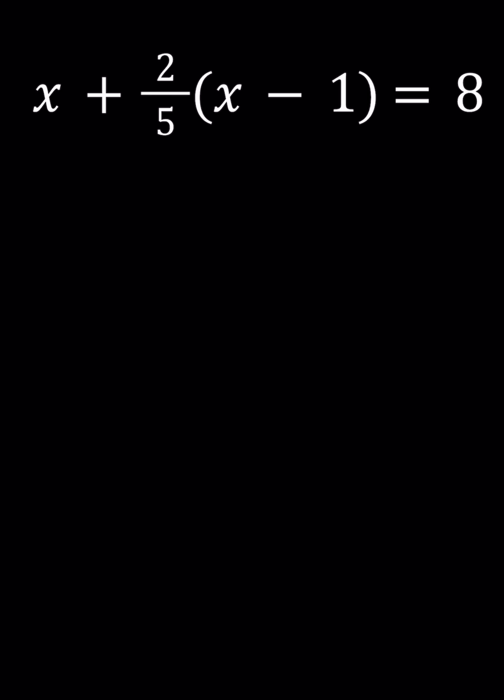We have x plus 2 over 5 multiplied by the quantity x minus 1 equals 8, and we're going to be solving for x values. What else can we solve for, right?